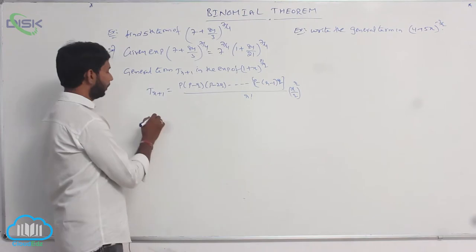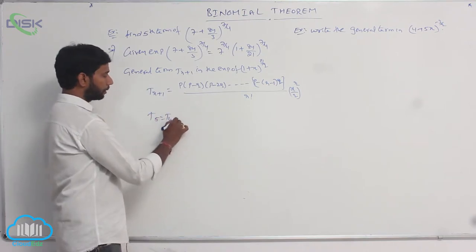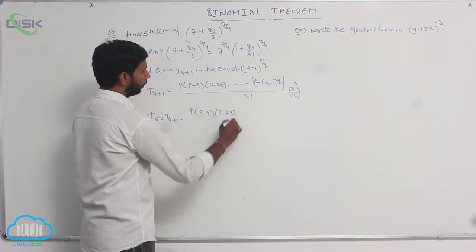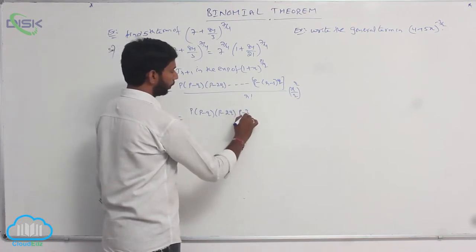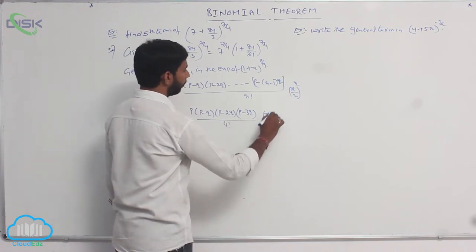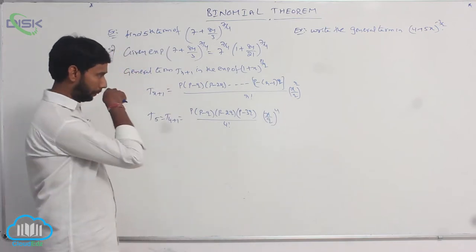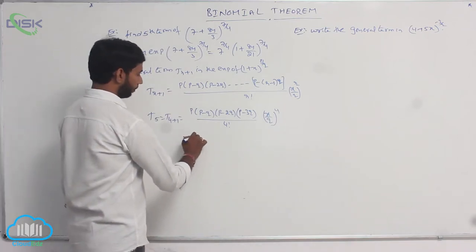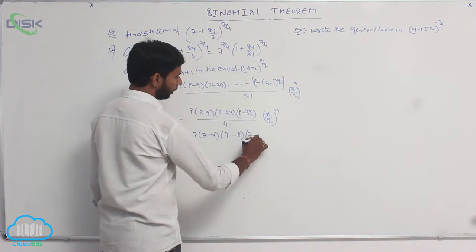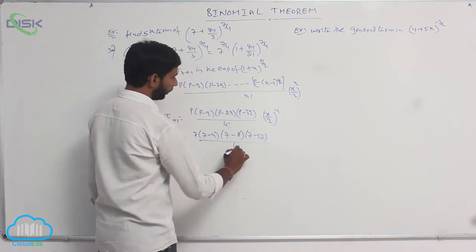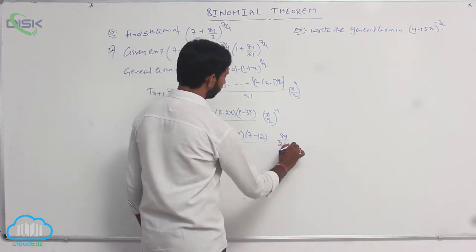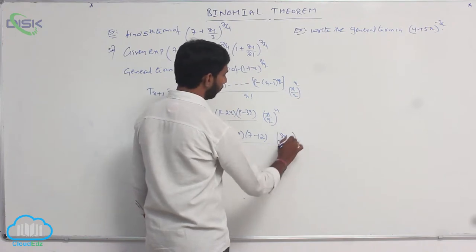For the fifth term, t5 = t(4+1) = [p · (p−q) · (p−2q) · (p−3q)] / 4! · (x/q)^4. Here p = 7, so: 7 · (7−4) · (7−8) · (7−12) / 4! · (8y/21)^4, where x/q = 8y/21 and q = 4.